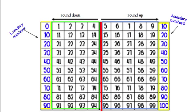When rounding, we are finding the two boundary numbers. This chart can be used for rounding by tens. If you look at these numbers right here, this is some of our boundary numbers, and these are our other boundary numbers when counting by tens.